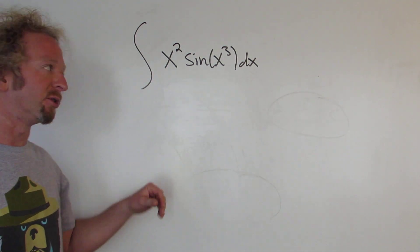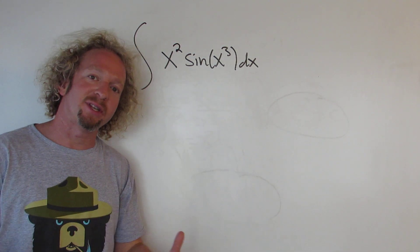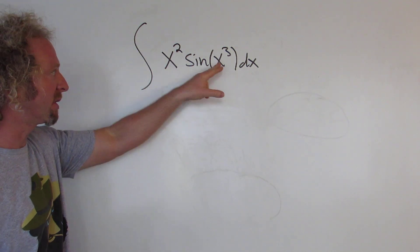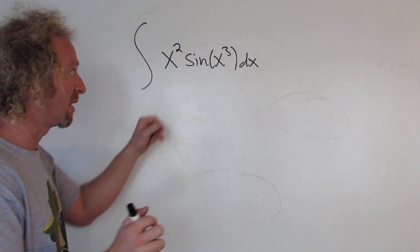In this video, we have an indefinite integral: x squared times the sine of x cubed. So to integrate this, we're going to make a u substitution. We'll start by letting u equal x cubed.